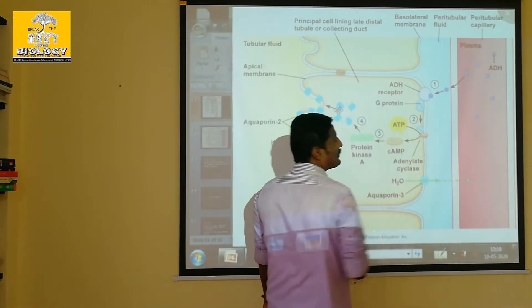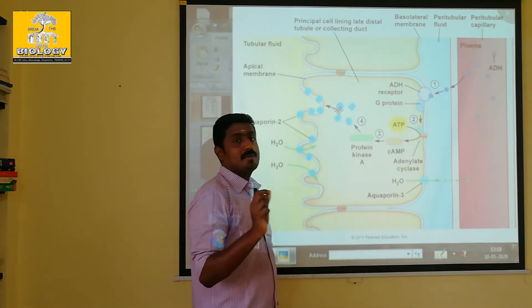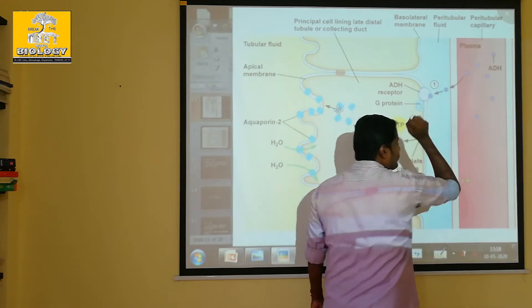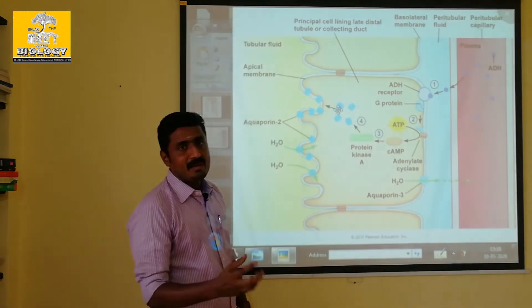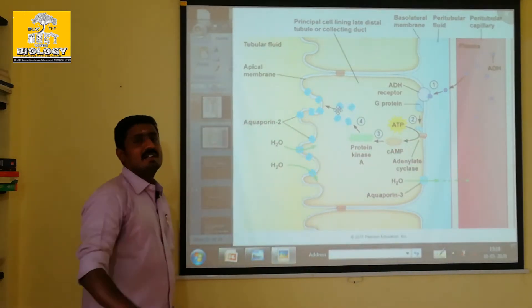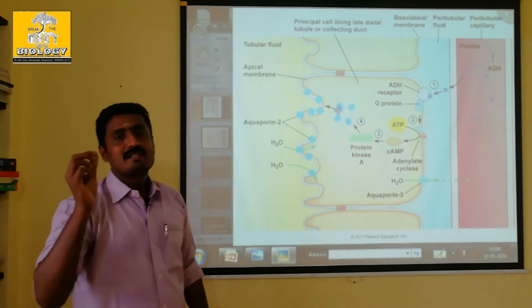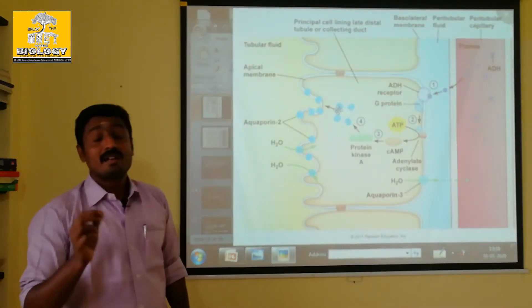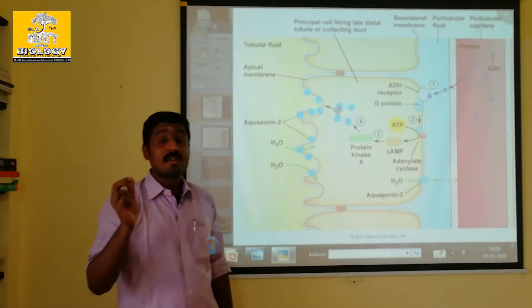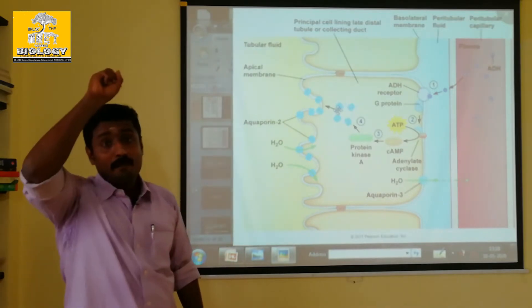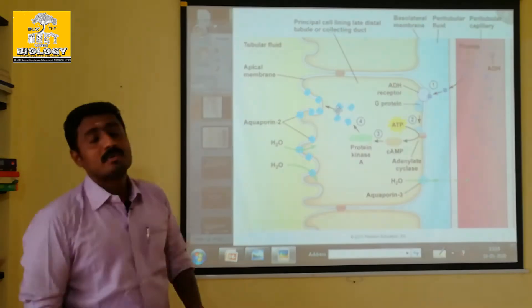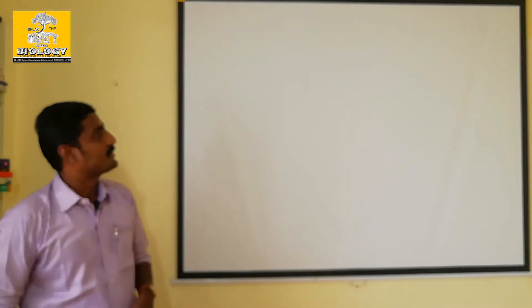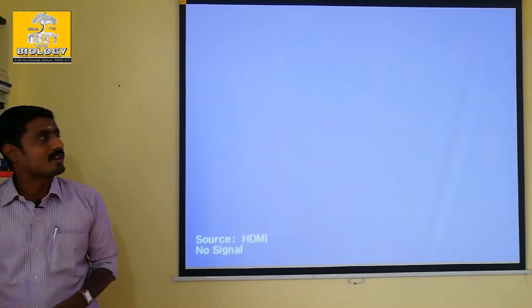ADH — the ADH receptor. How do you produce ADH? You can use the hypothalamus and the neurohypophysis.